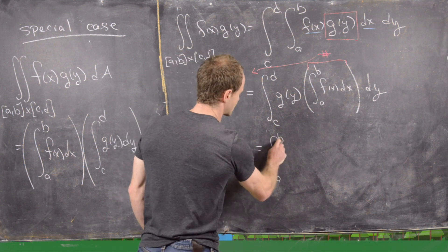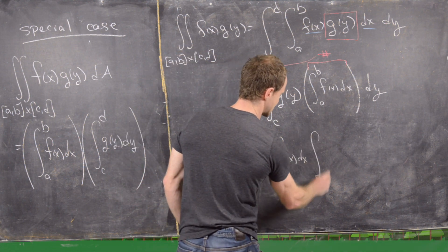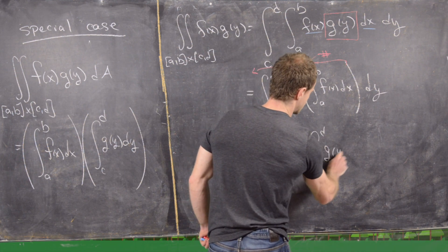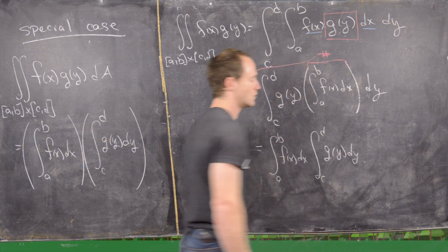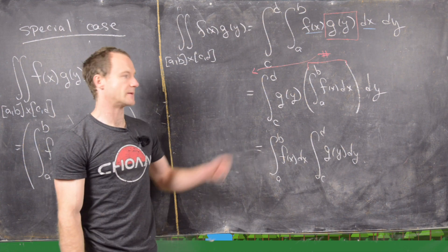And that's going to leave us with the integral from a to b of f(x) dx times the integral from c to d of g(y) dy, which is exactly the formula that we wanted.